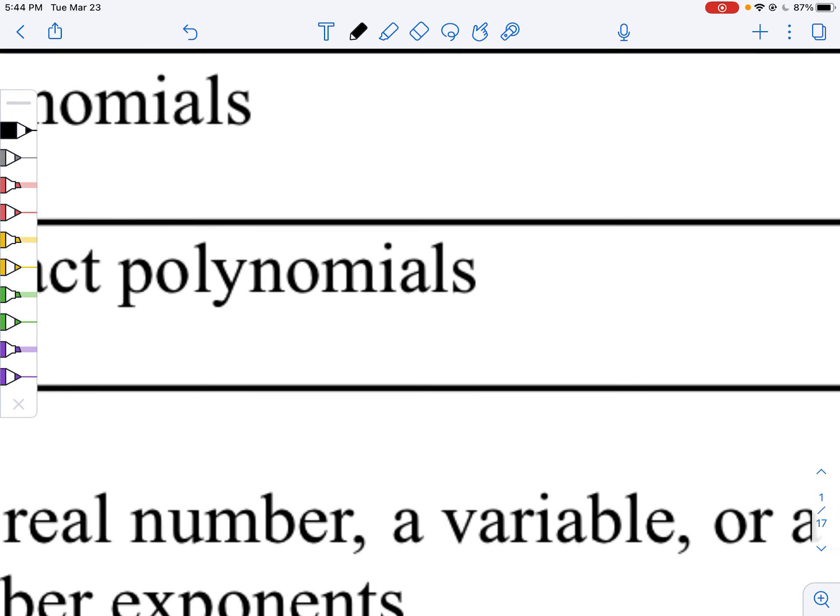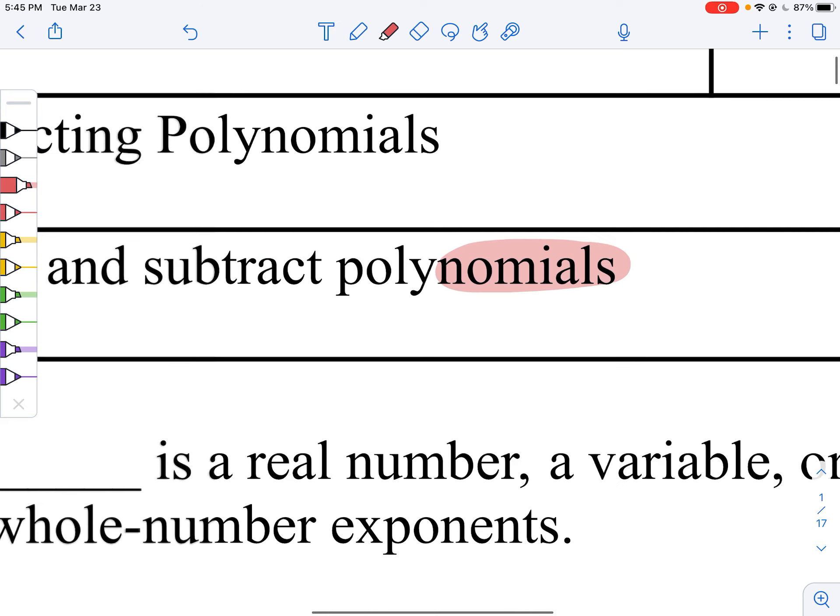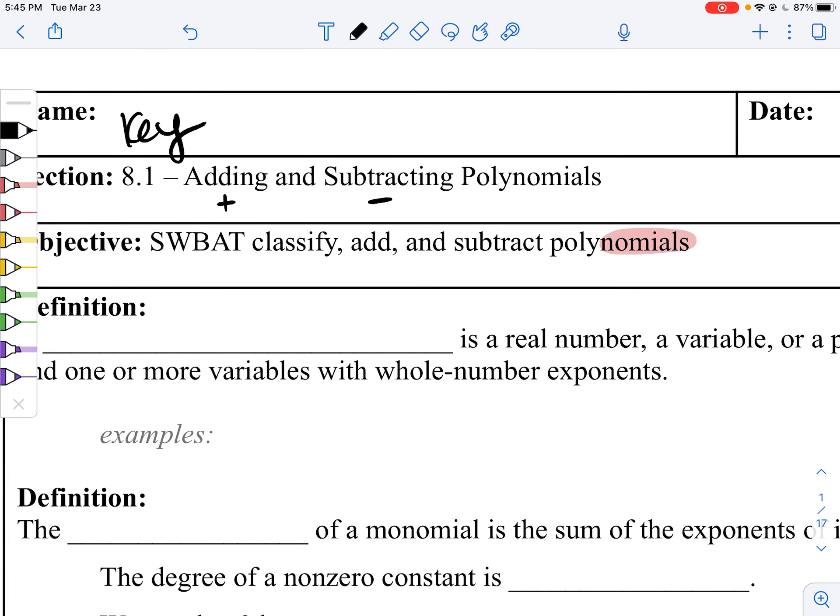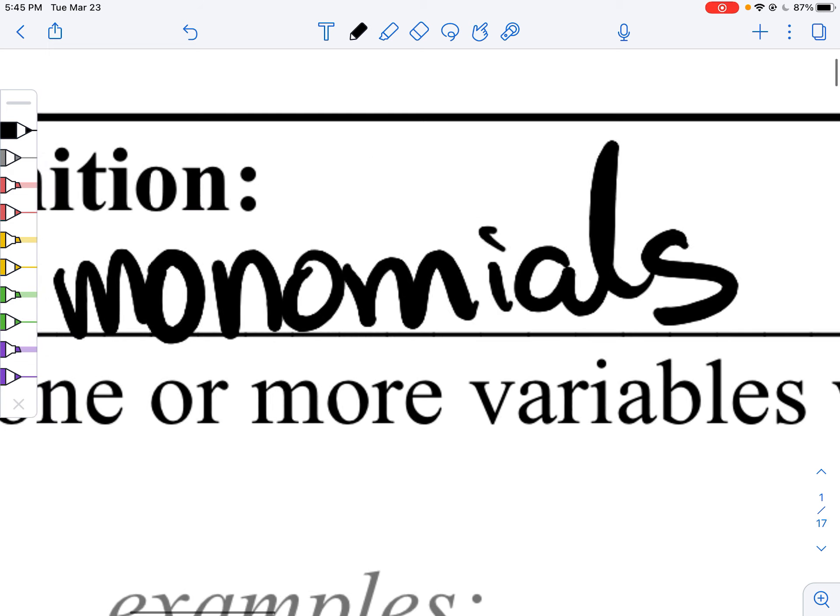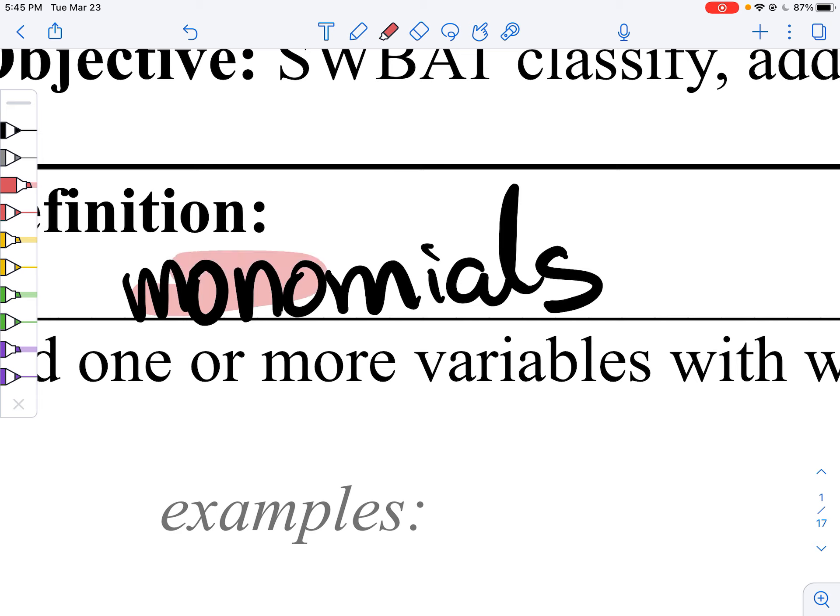Before we talk about polynomials, let's talk real quick about monomials. You've probably seen mono before in monocle, it's like glasses with one eye. Or monotonous, someone who talks in one tone. Mono means one, and then nomial means number.